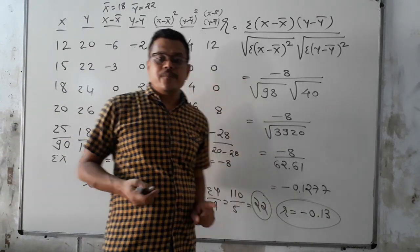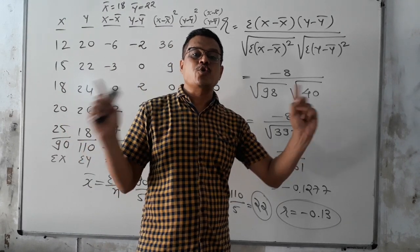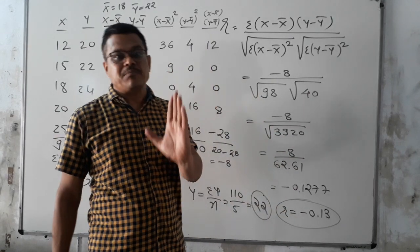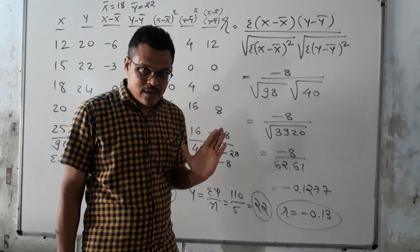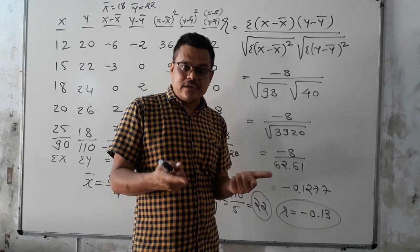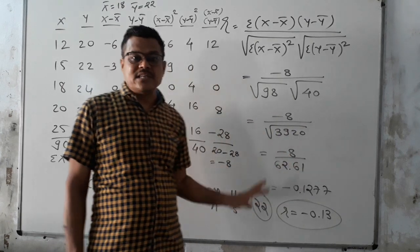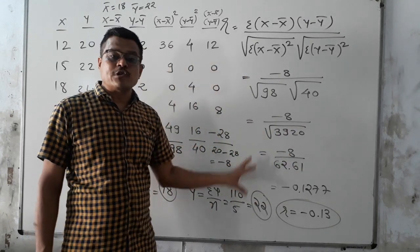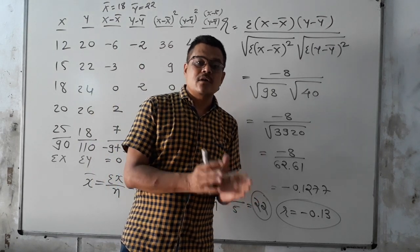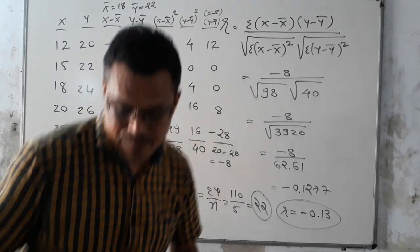Also remember: in correlation, the answer always lies between −1 and +1. If your answer lies between −1 and +1, it means 99% your answer is right. Suppose your answer is more than 1 or less than −1, then check again for any mistake. Now you practice this type of 4 questions as per the given PDF file, and I will give the answers the next day. Thank you.